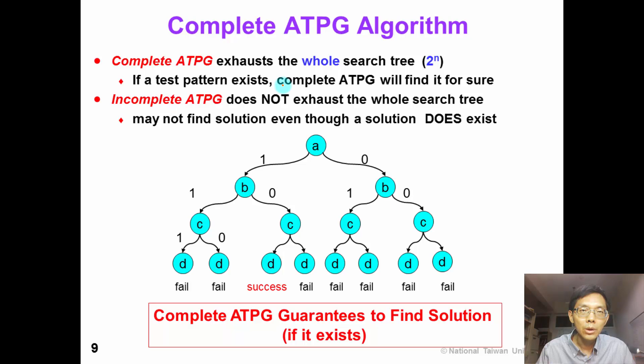Now that we know ATPG is a decision problem, we want to know how effective is the search. A complete ATPG algorithm can exhaust the whole search tree, which is exponential in size. If a test pattern exists, the complete ATPG algorithm will find it for sure.